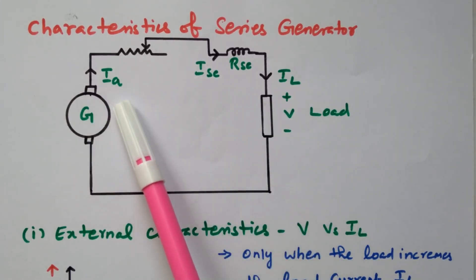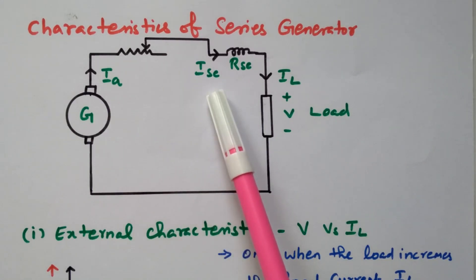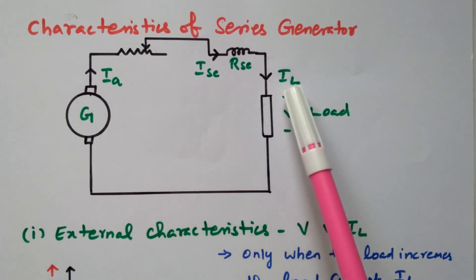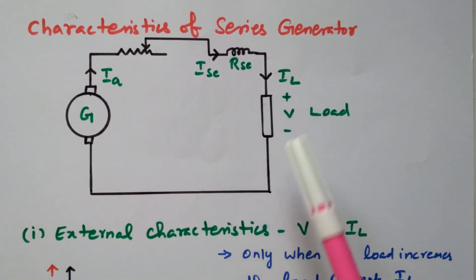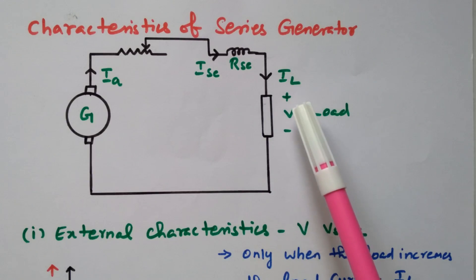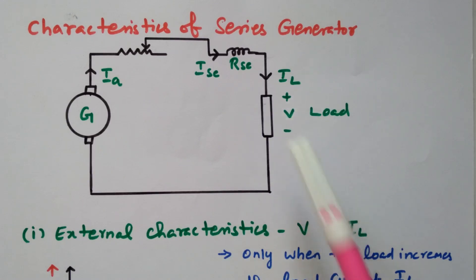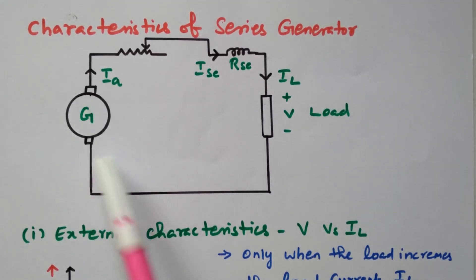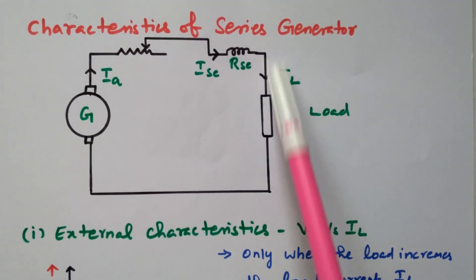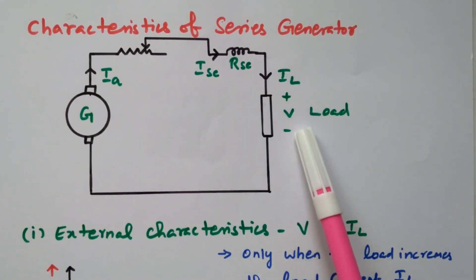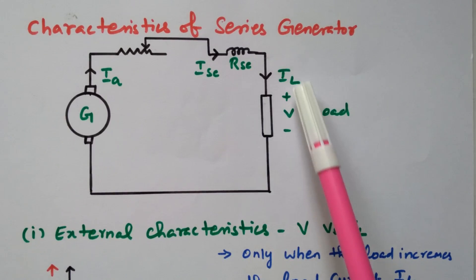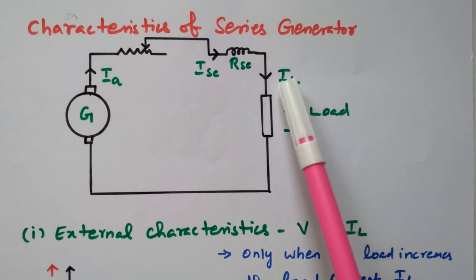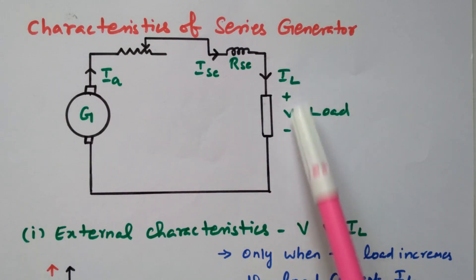The armature current is equal to the series field current as well as the load current: IA = ISE = IL, because armature, field, and load are all connected in series. First we will see the external characteristics — that is V versus IL. External means load side: terminal voltage versus load current.